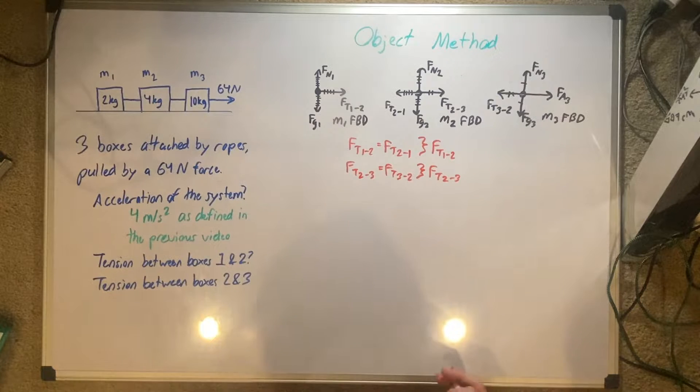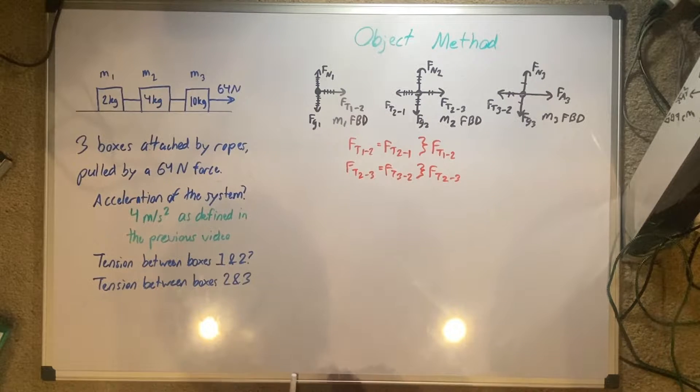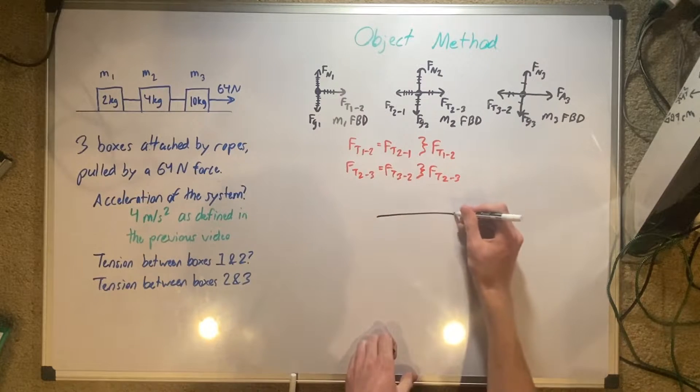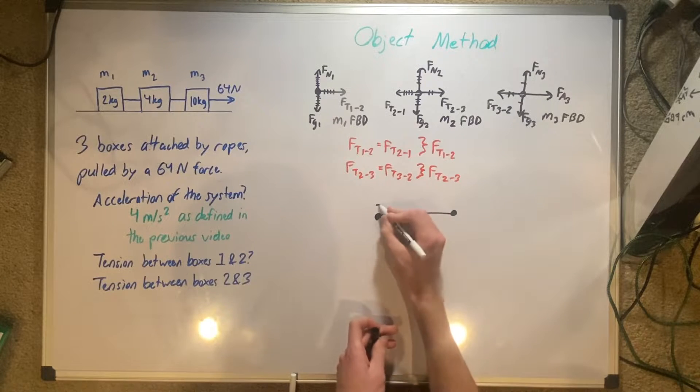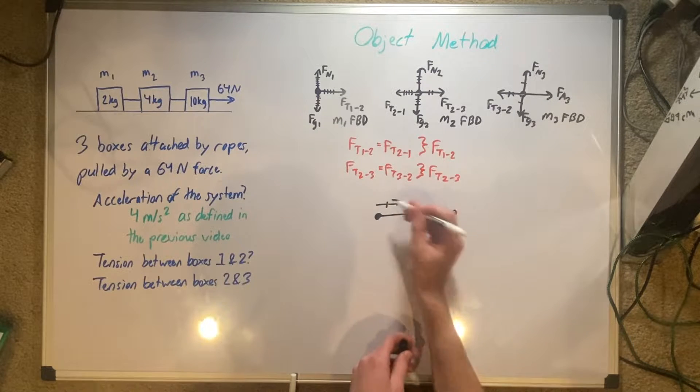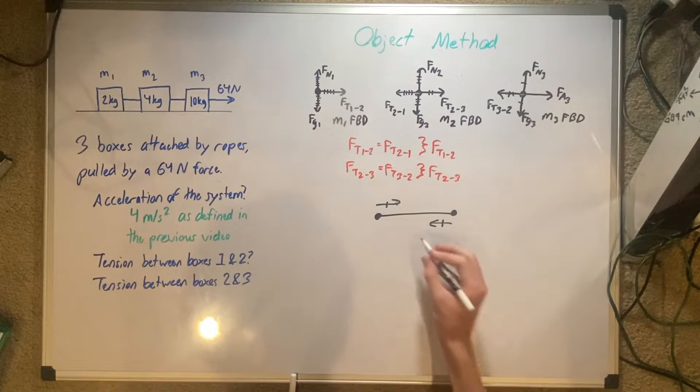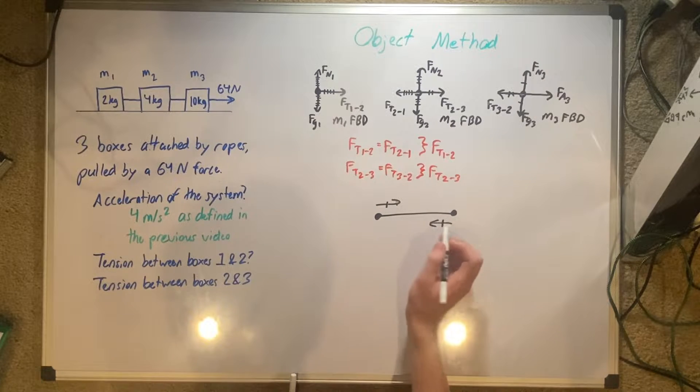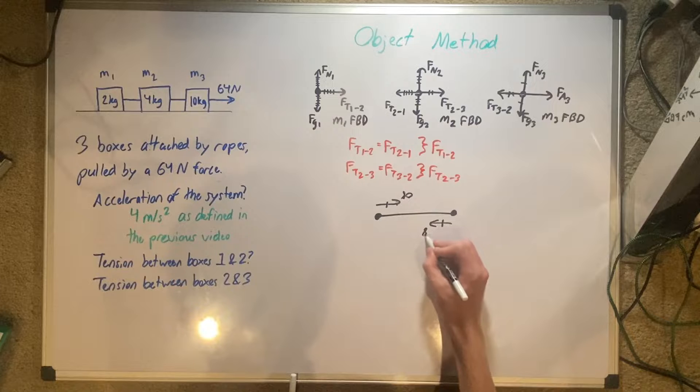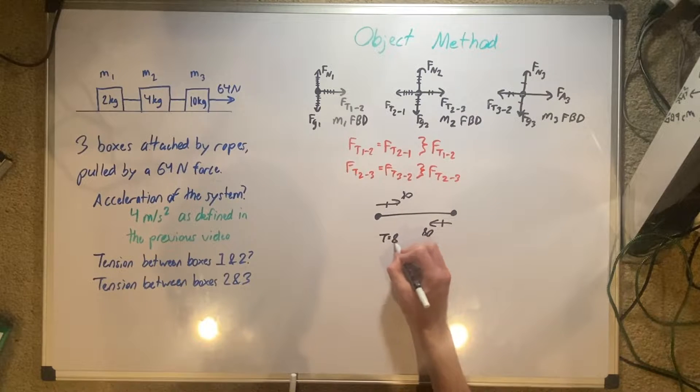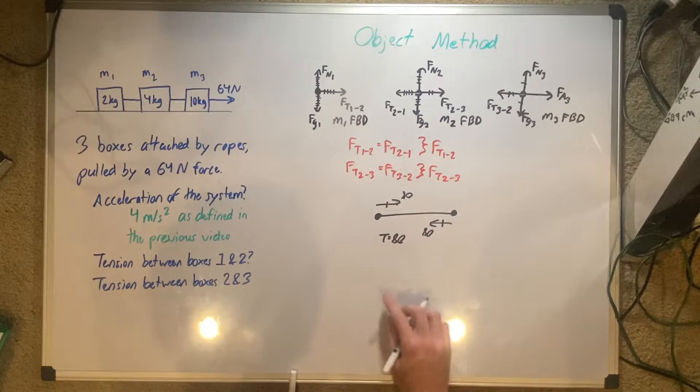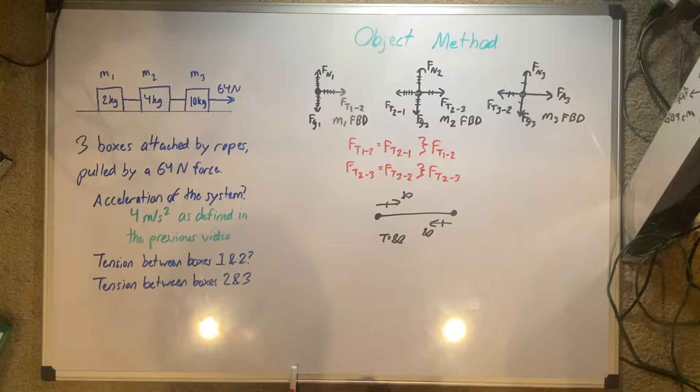We know this because when you have tension in a rope, one's going this way, one's going this way, and they're both equal to one another. Our tension is literally just whatever force it's going. If this is 80 and this is 80, our tension is equal to 80. It doesn't matter if it's going left or right.